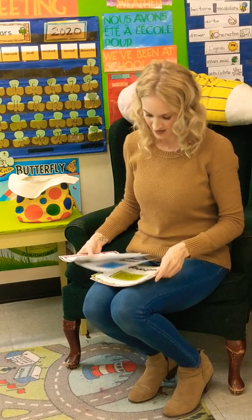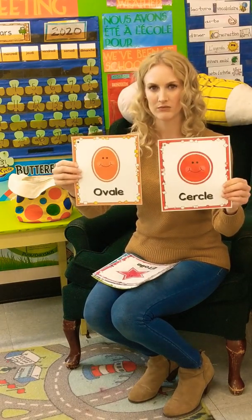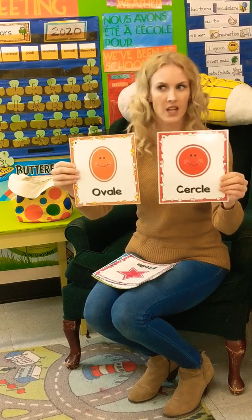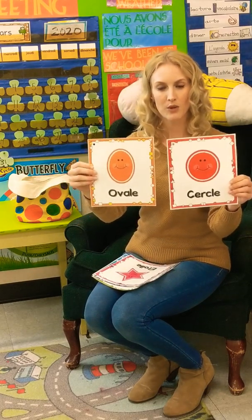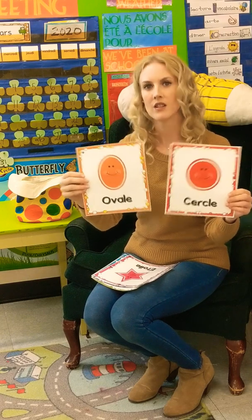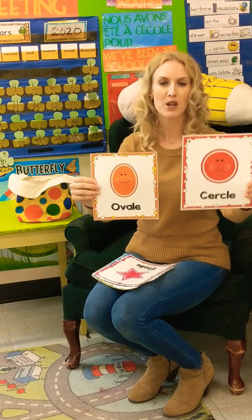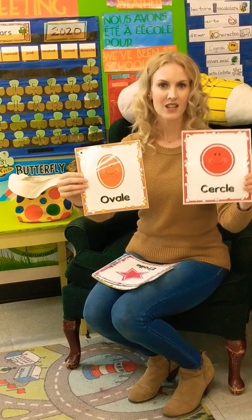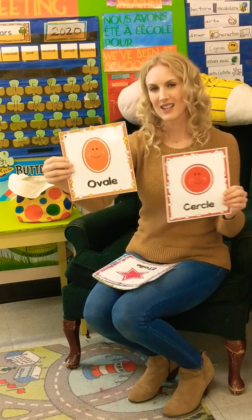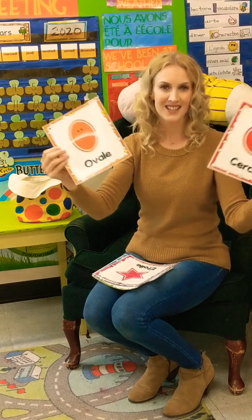J'ai une question pour vous autres, les amis. C'est quoi la différence entre un cercle et un ovale? What's the difference between the two? Ils sont tous les deux ronds. Ils n'ont pas de côté, ils n'ont pas de coin. They are both round. They don't have sides or corners. So what's the difference? Celui-ci, ça ressemble comme un pneu. Et celle-là, c'est comme un oeuf. This one looks like a tire, and this one looks like an egg. Celui-là est tout rond. Celui-là, c'est rond, mais un peu écrasé. This one is completely round. This one's kind of squished. Ça, c'est la différence.